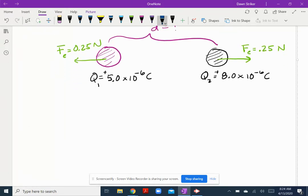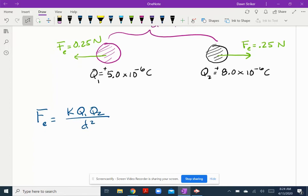All right. So I'm going to use Coulomb's law. Fe is equal to K Q1 Q2 over D squared. I'm just going to plug in everything that I have and solve. So 0.25 is equal to 9 times 10 to the 9 Newton meters squared per Coulombs squared.